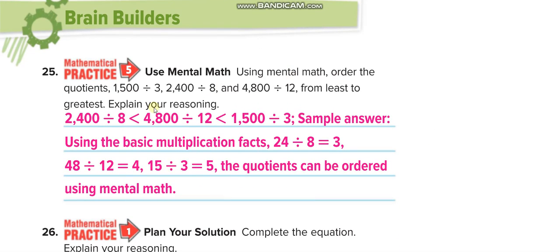Using mental math, order the quotients. The first one, 1500 divided by 3. 15 divided by 3 is 5. 24 divided by 8 is 3. And 48 divided by 12 is 4. So this is the least one, will come first. Then this one, second. And then this one, last.